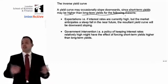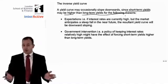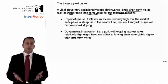One reason for an inverse yield curve is expectations. If interest rates are currently high but the market anticipates a steep fall in the near future, the yield curve will be downward sloping. For example, if interest rates are currently 10% and you expect them to remain at 10% for 12 months, depositing money for 12 months gives you a 10% return. However, if you believe rates will plummet to 2% over the next 10 years, investing for 10 years would yield an average return somewhere between 10% and 2%. Therefore, the longer the term to maturity, the lower the interest rate would be.